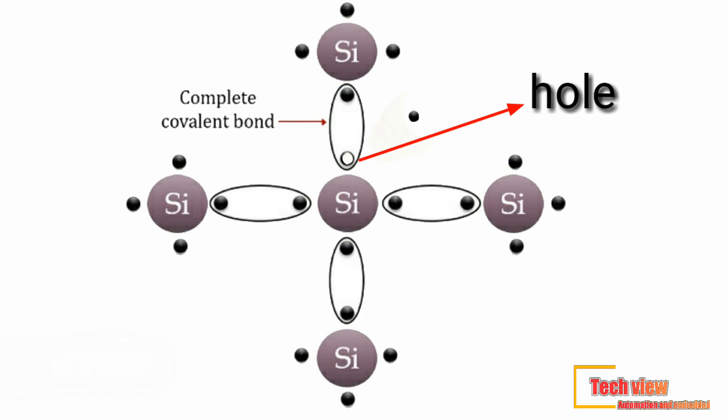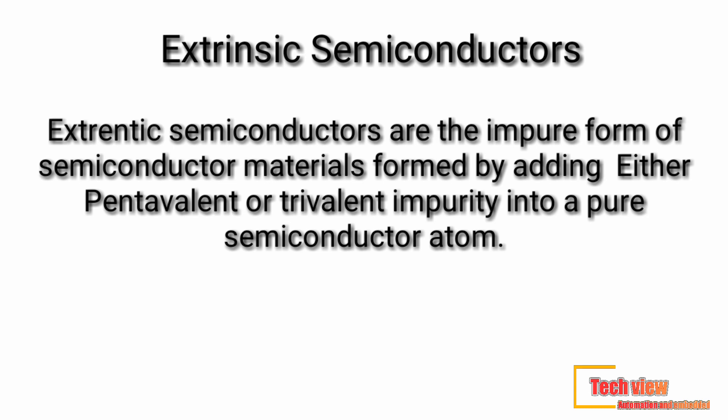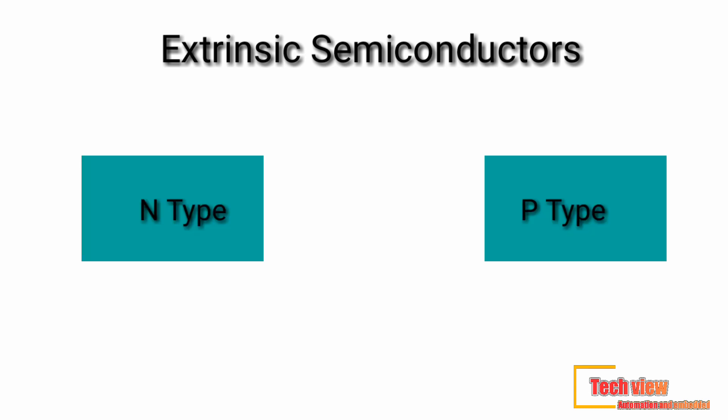Extrinsic semiconductors are the impure form of semiconductor materials formed by adding either pentavalent or trivalent impurities into a pure semiconductor. The process of deliberately adding impurities to a semiconductor material is called doping. Doping is done after the semiconductor material has been refined to a high degree of purity. A doped semiconductor is called an extrinsic semiconductor, and extrinsic semiconductors are basically of two types.